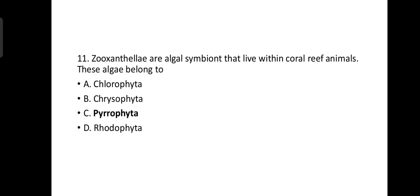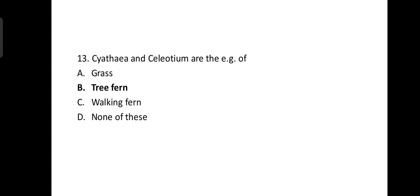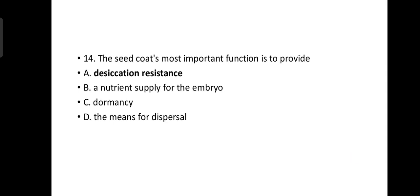In mosses, the gametophyte may be monoecious as well as dioecious, so the answer A and B is correct. Cyathea and Cibotium are the examples of tree fern.